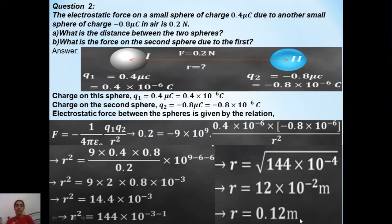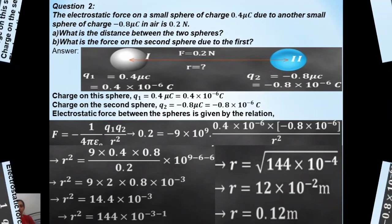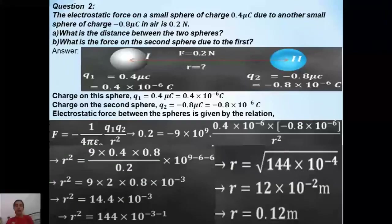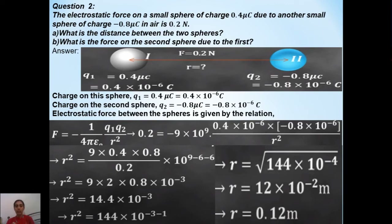The decimal shifts 2 times to the left, so the answer becomes r equals 0.12 meter. Since it is in SI units, our answer stays in meters and we need not convert it again. This is how we find the distance between any two charged spheres.